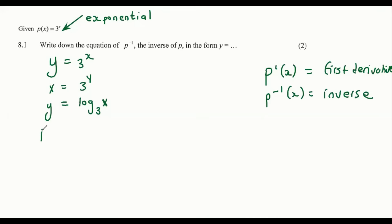And then we should obviously just end it off the proper way by saying that the inverse of P is going to be equal to log₃x. Remember, guys, the inverse of an exponential is a log. And the inverse of a log is an exponential. They are inverses of each other. So that's the first question done.